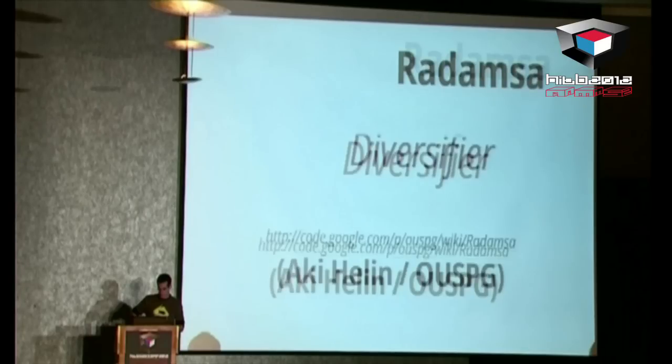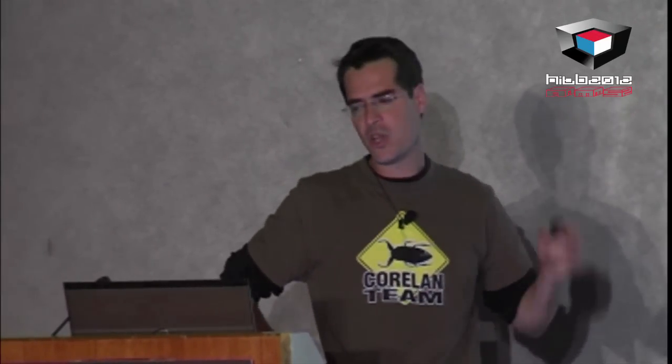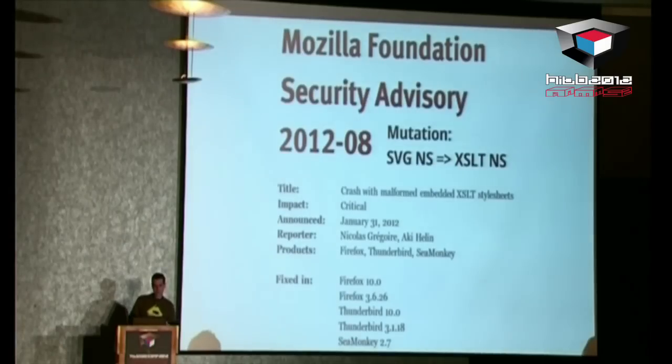The monitoring was done with Valgrind when I don't have access to the source code — for example for the Oracle XSLT engine — and with AddressSanitizer, which is an LLVM plugin, when I can recompile the parser. As for any fuzzing session, the only interesting thing is how many bugs you found. I found a lot, but I have very few published advisories because vendors are slow.